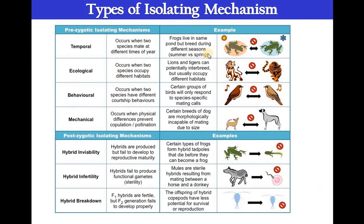These are the different kinds of isolating mechanisms that ultimately lead to speciation. There are prezygotic isolating mechanisms: temporal isolation occurs when two species mate at different times of year; ecological isolation occurs when two species occupy different habitats; behavioral isolation occurs when two species have different courtship behaviors; and mechanical isolation occurs when physical differences prevent copulation between two species.